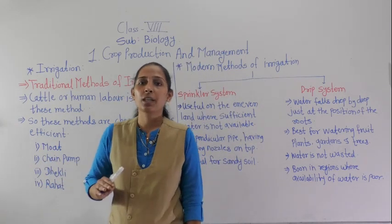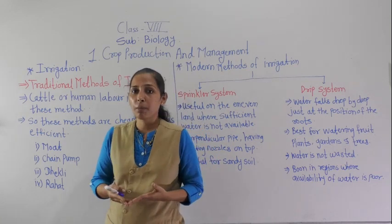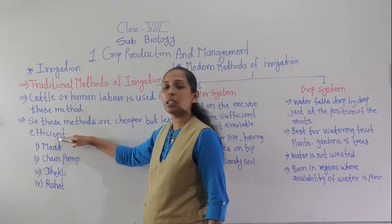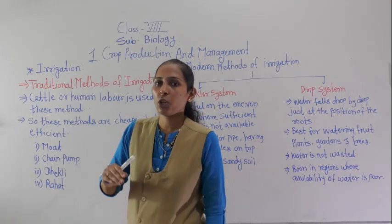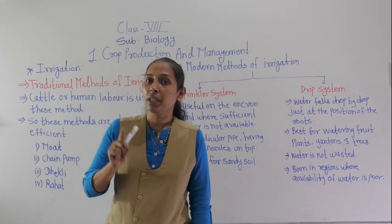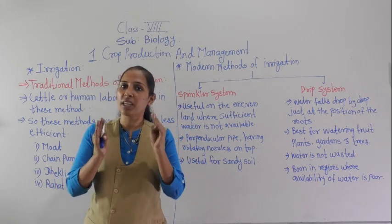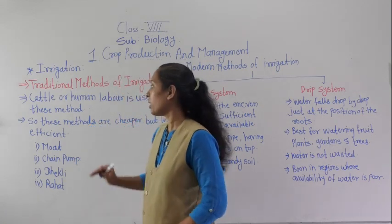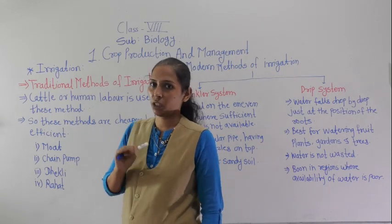These methods were cheaper, meaning we did not have to spend more money, but they are not that much efficient. Irrigation means we have to provide water at regular intervals while also controlling the wastage of water. For that reason, these traditional methods were not that much efficient.